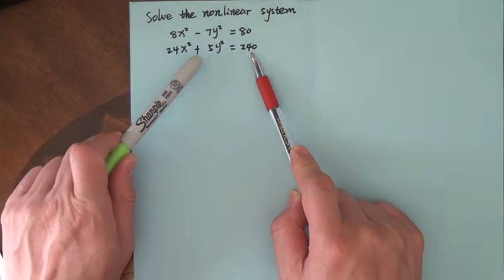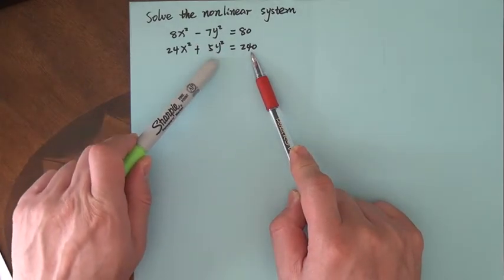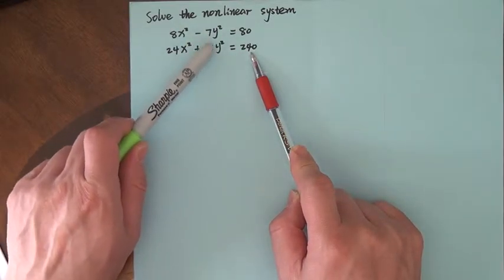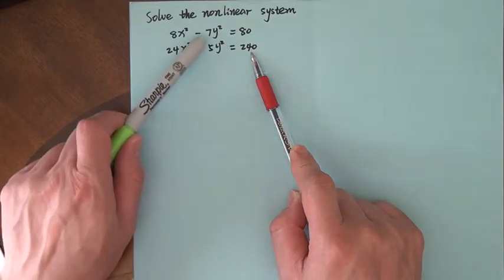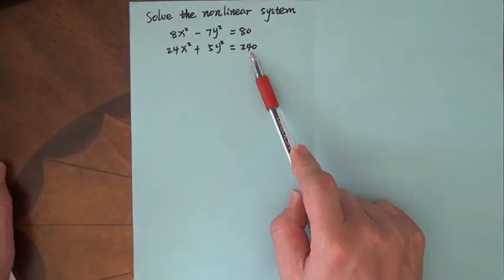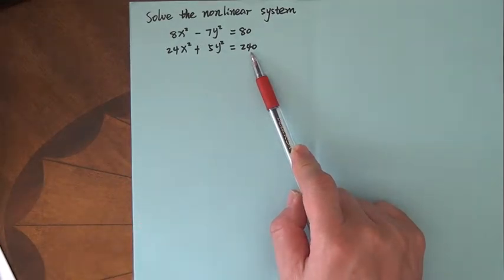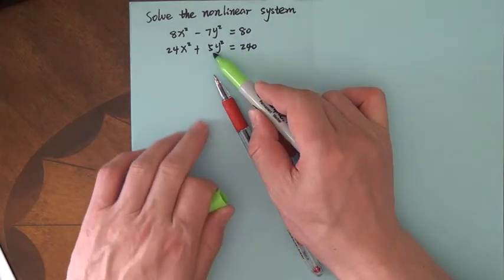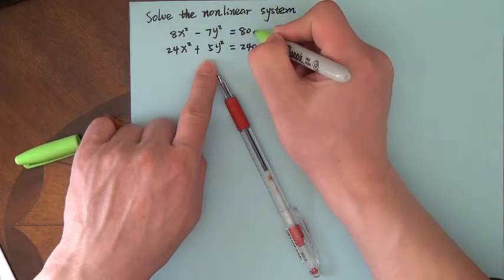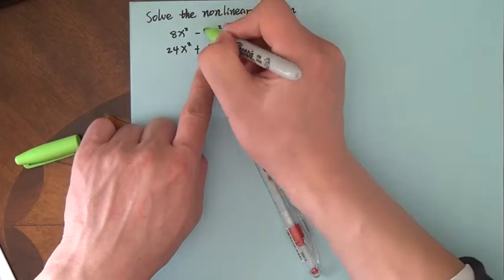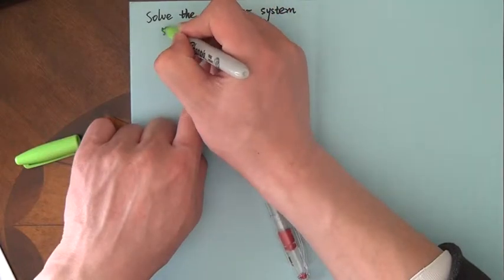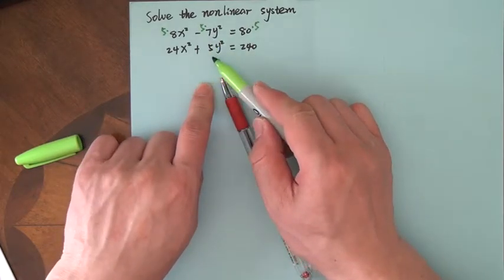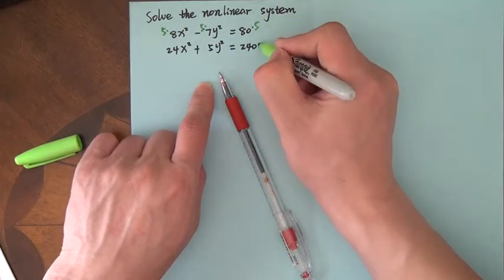Here you can see the coefficient of y squared. One is negative, one is positive, so we like to cancel y squared. Unfortunately, here is 7, here is 5. But there's no problem if we multiply every term up there by 5, and every term down there by 7. That's the technique.